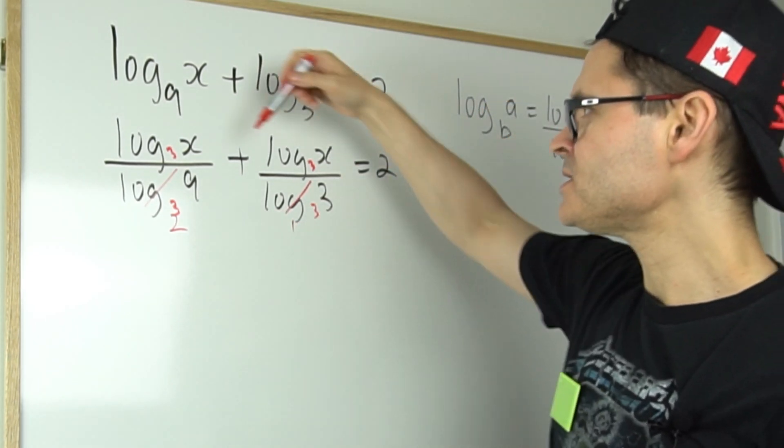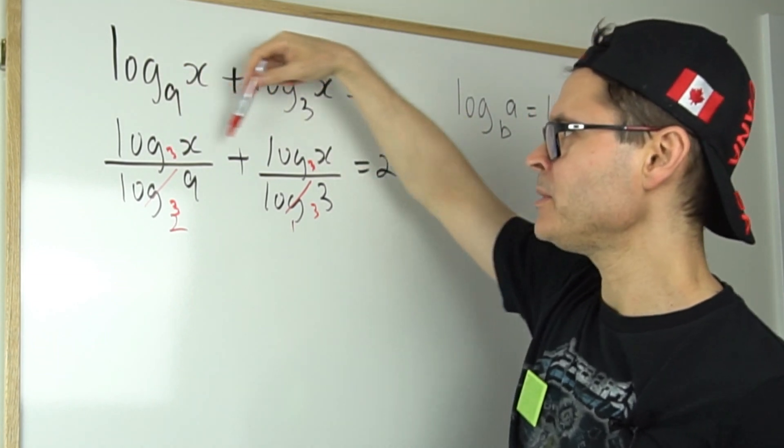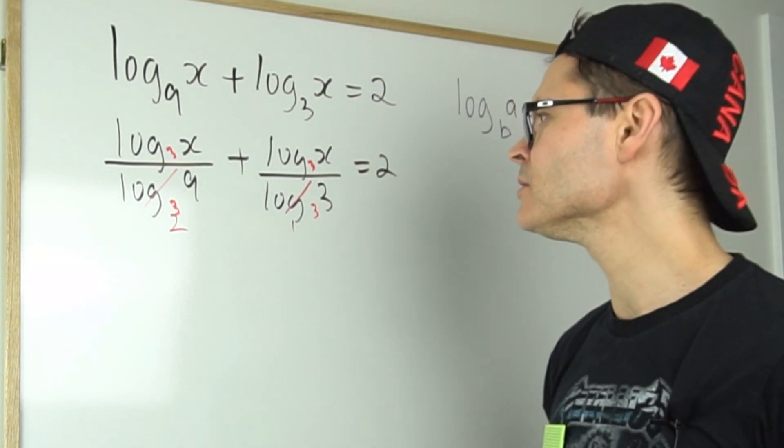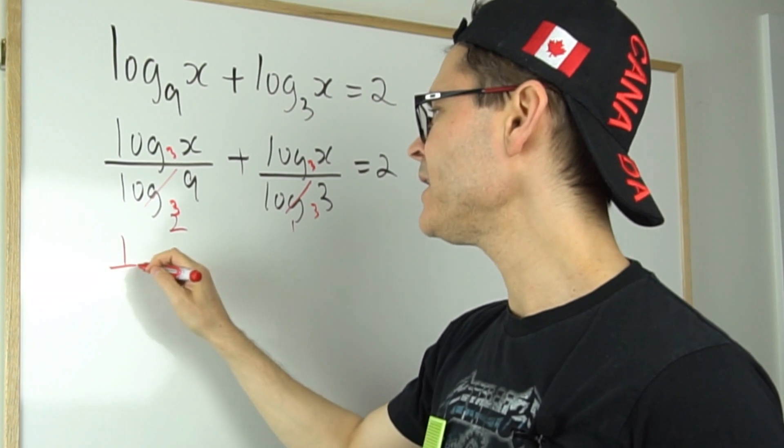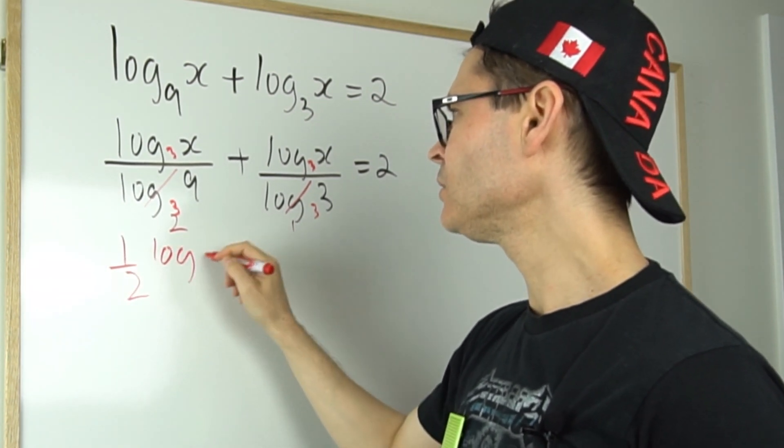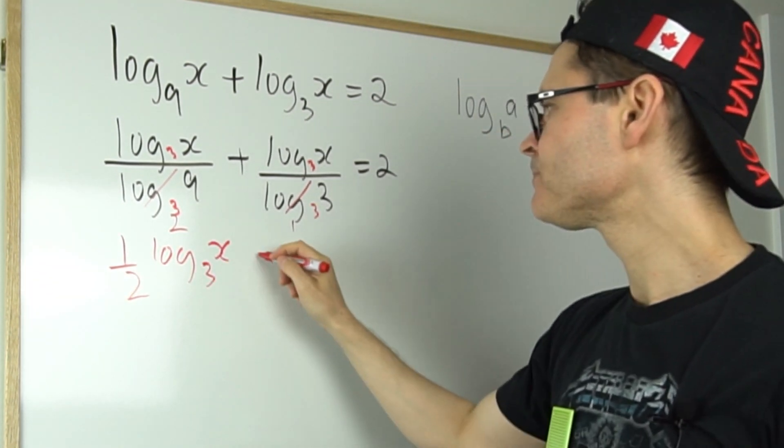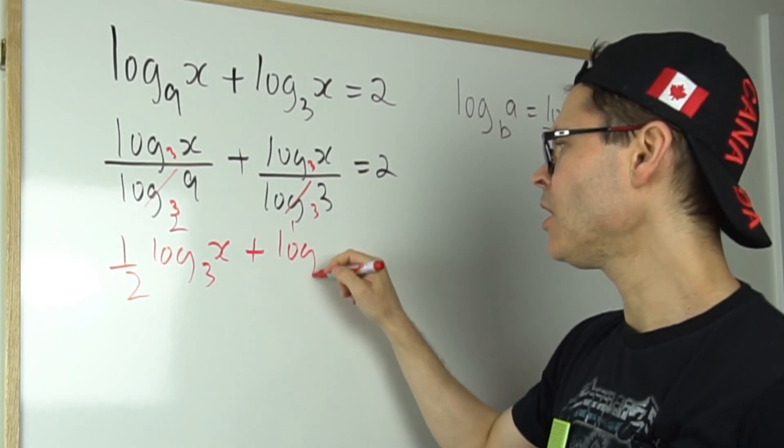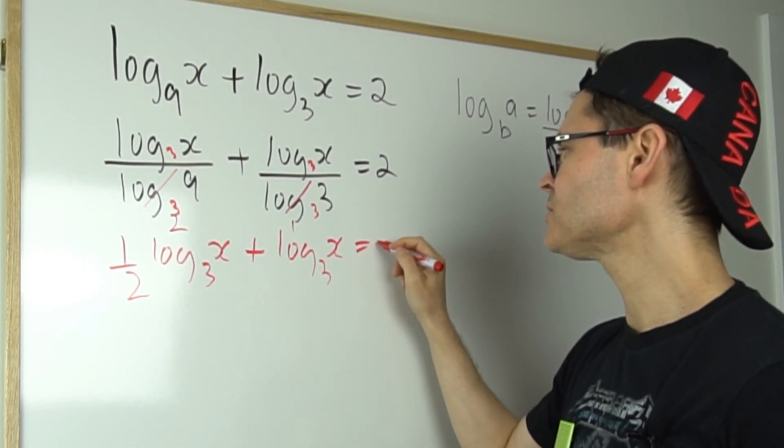So you can see here, these are common terms, like terms, whereby I have one half log x base three plus just the log of x base three equals two.